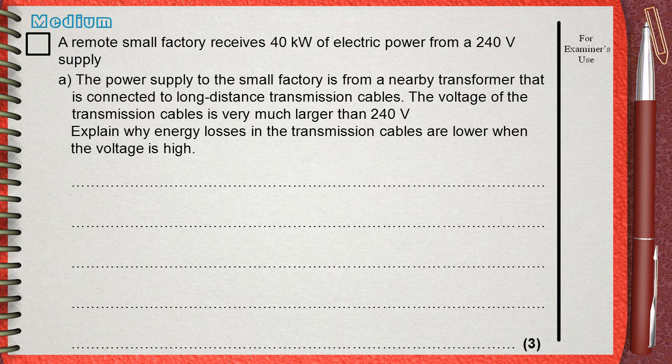The voltage of the transmission cables is very much larger than 240 volts. Explain why energy losses in the transmission cables are lower when the voltage is high.